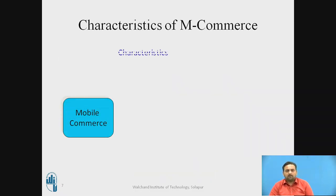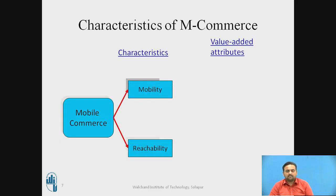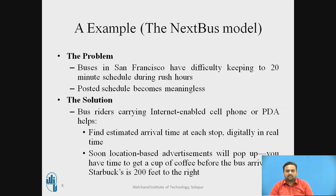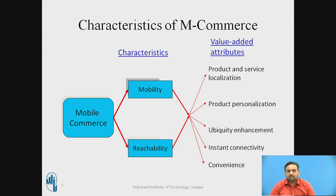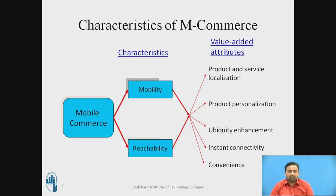The characteristics of M-commerce are mobility and reachability. These characteristics contain value-added attributes such as product and service localization, product personalization, ubiquity, instant connectivity, and convenience. So the main characteristics of M-commerce are mobility and reachability along with these value-added attributes.